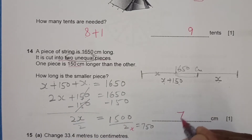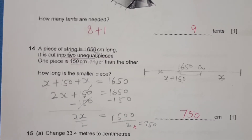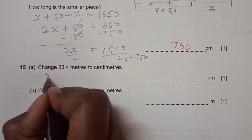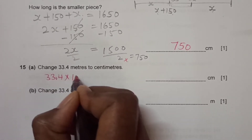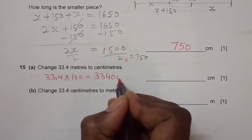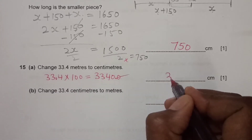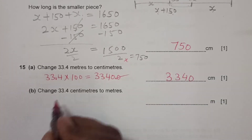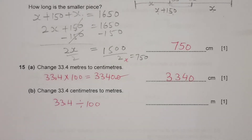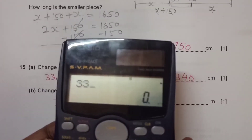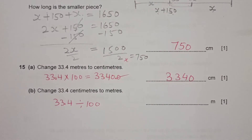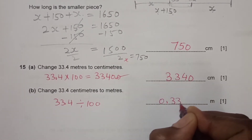Number 15: change 33.4 meters to centimeters. Since 1 meter equals 100 centimeters, we multiply by 100, giving 3340 centimeters. Then change 33.4 centimeters to meters: divide by 100, which gives 0.334 meters.